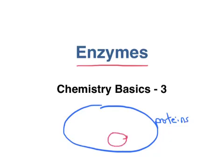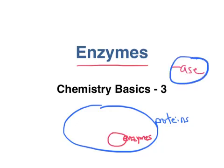Enzymes are one category of proteins, but there are lots of proteins which aren't enzymes. One way to recognize an enzyme is to look at the name of the protein — if the name ends in A-S-E, or "ase," it's an enzyme.